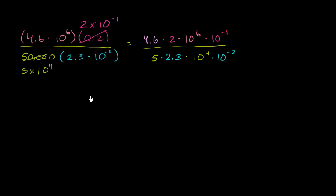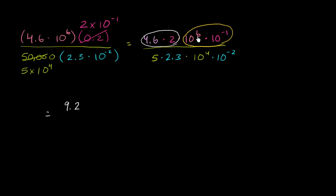Now let's simplify. In the numerator, 4.6 times 2 is 9.2. Then 10 to the sixth times 10 to the negative 1 — same base, so we add the exponents — gives 10 to the sixth minus 1, or 10 to the fifth power. So the numerator simplifies to 9.2 times 10 to the fifth.